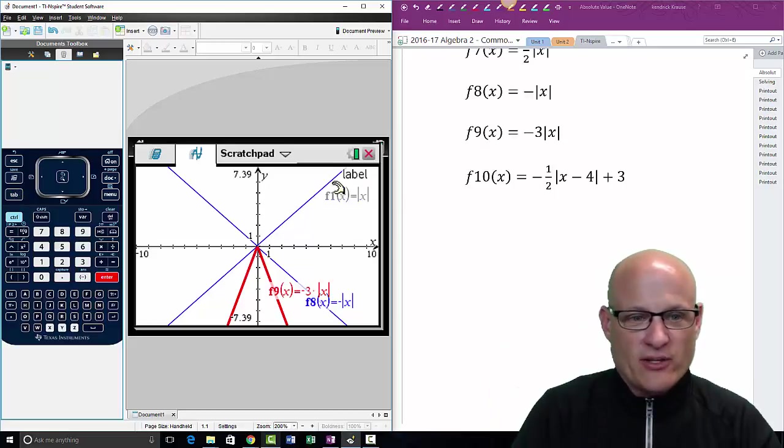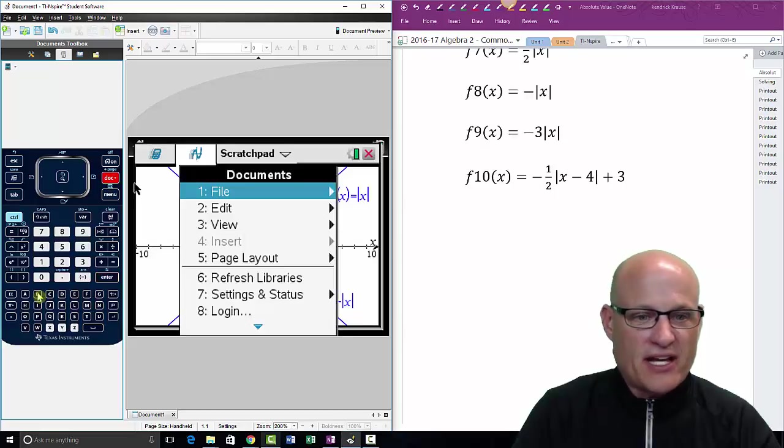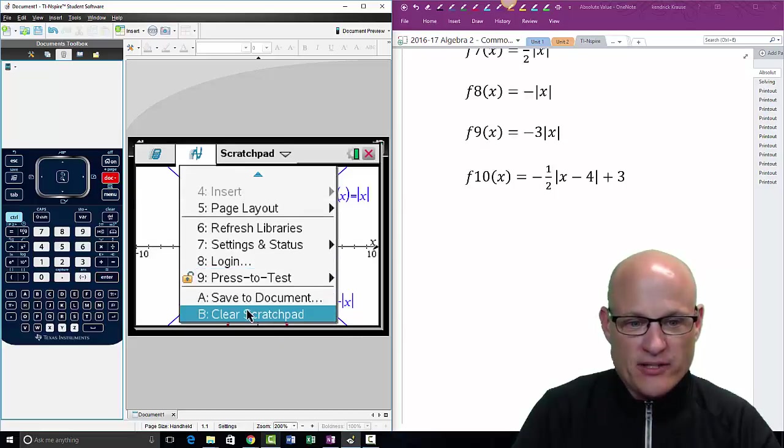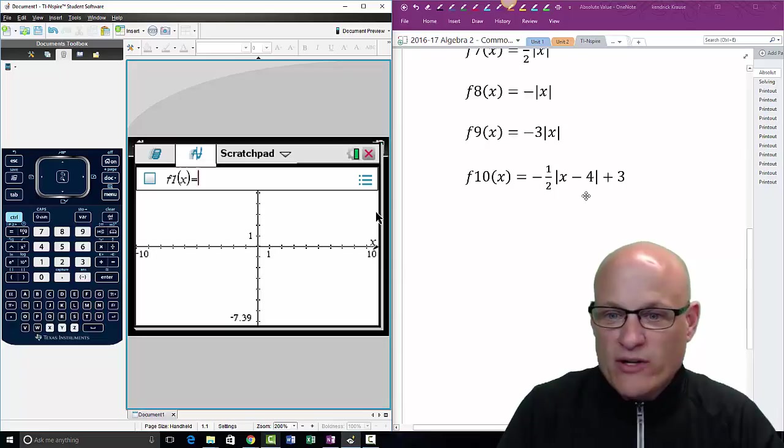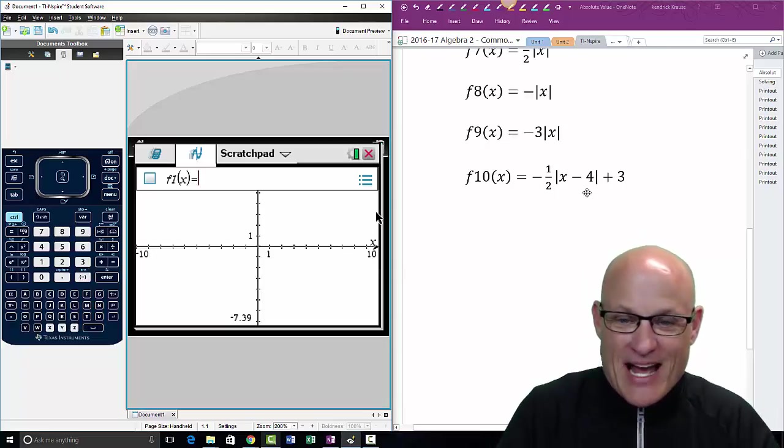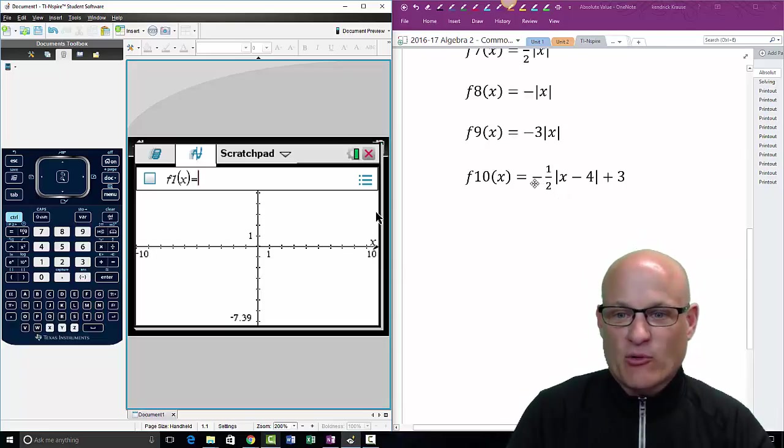All right, so now let's get rid of all these. I'm gonna hit doc B. Doc B gets rid of everything, it just clears out the entire scratch pad. If you want to know what B is, it says clear scratch pad. But you can just fit B, gets rid of everything. We're going to graph mode. Now we've got all this stuff going on. By now you should be able to say what's going on.